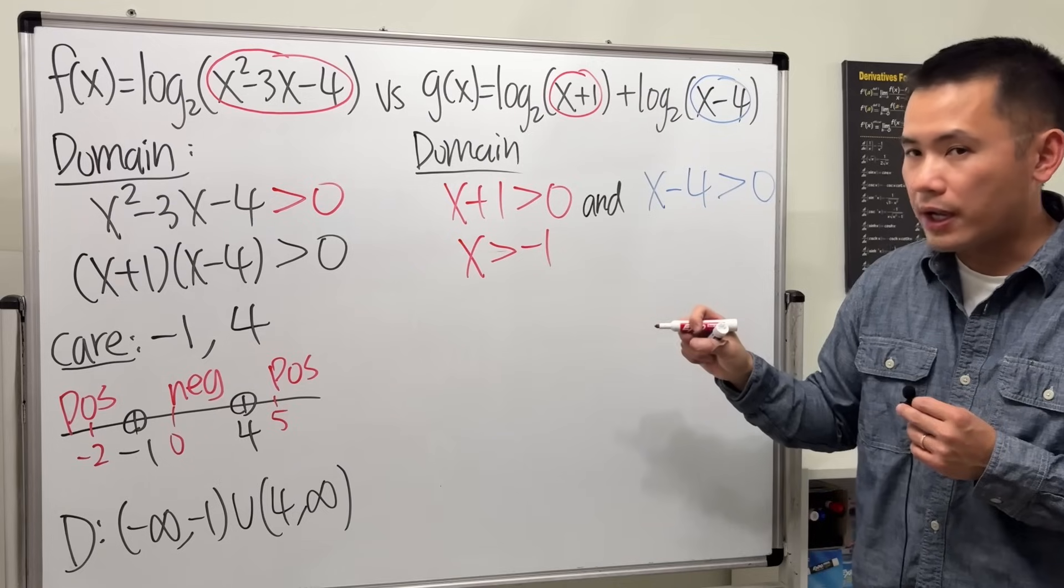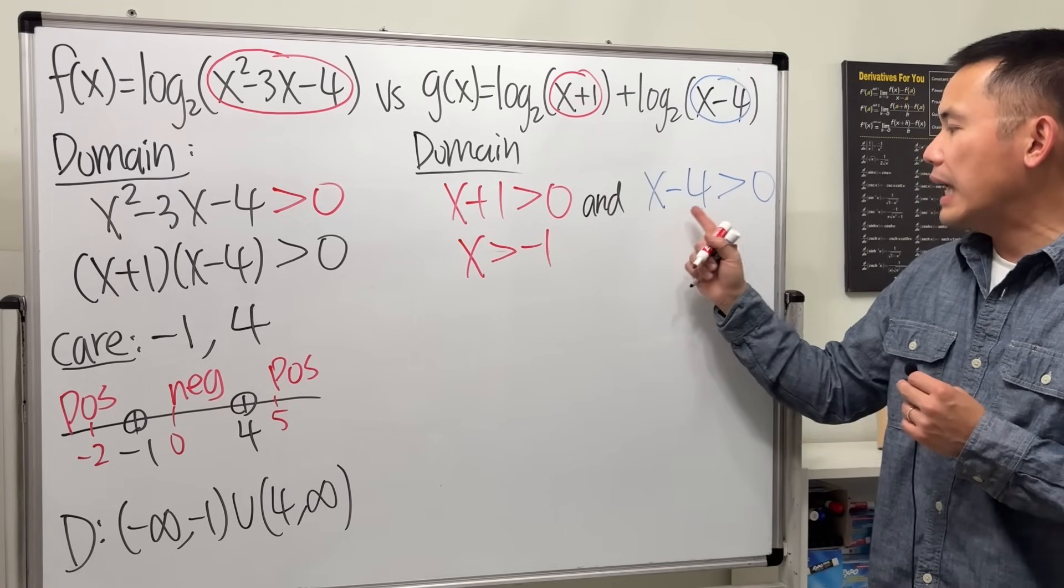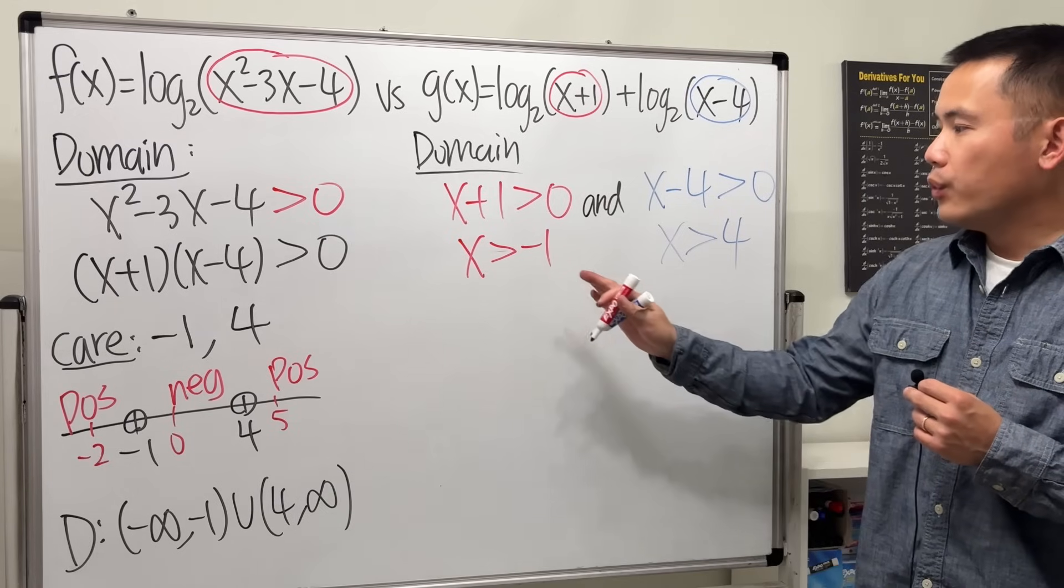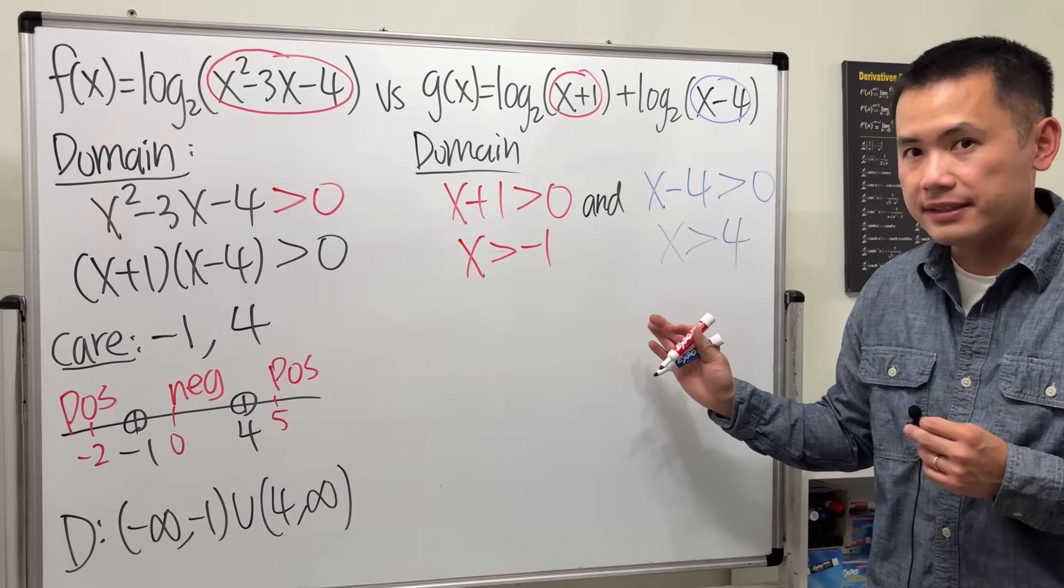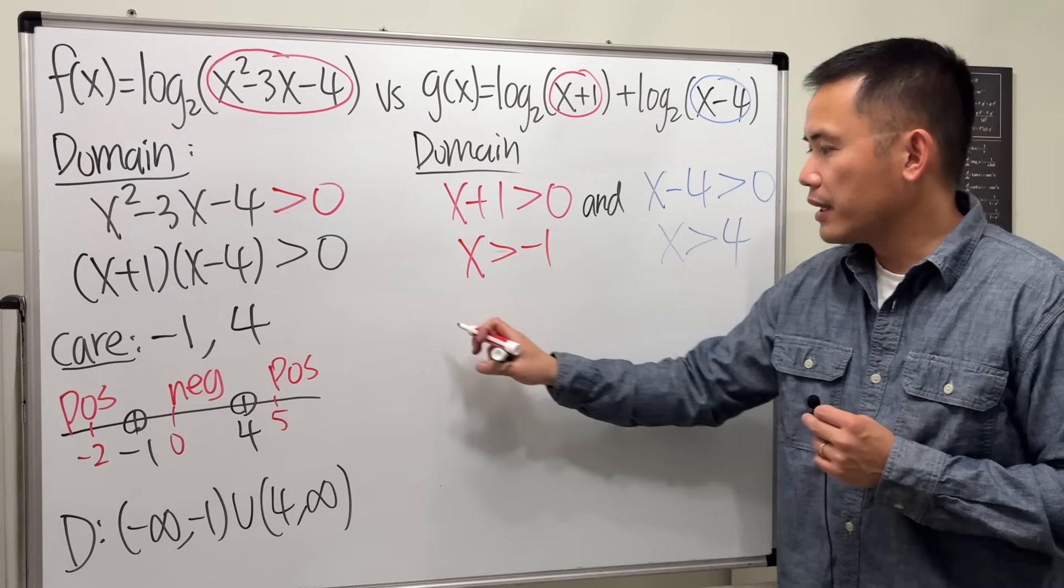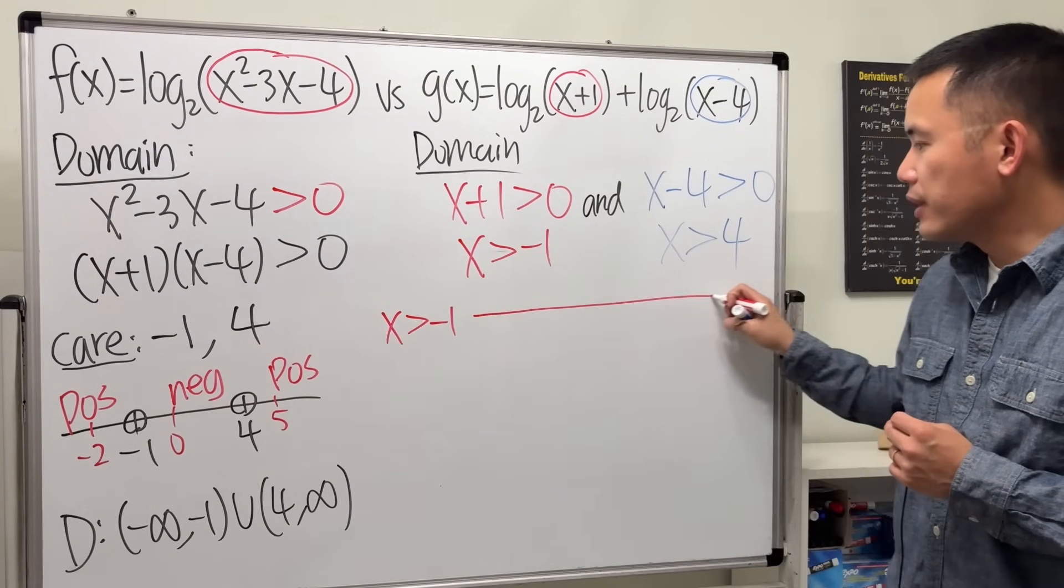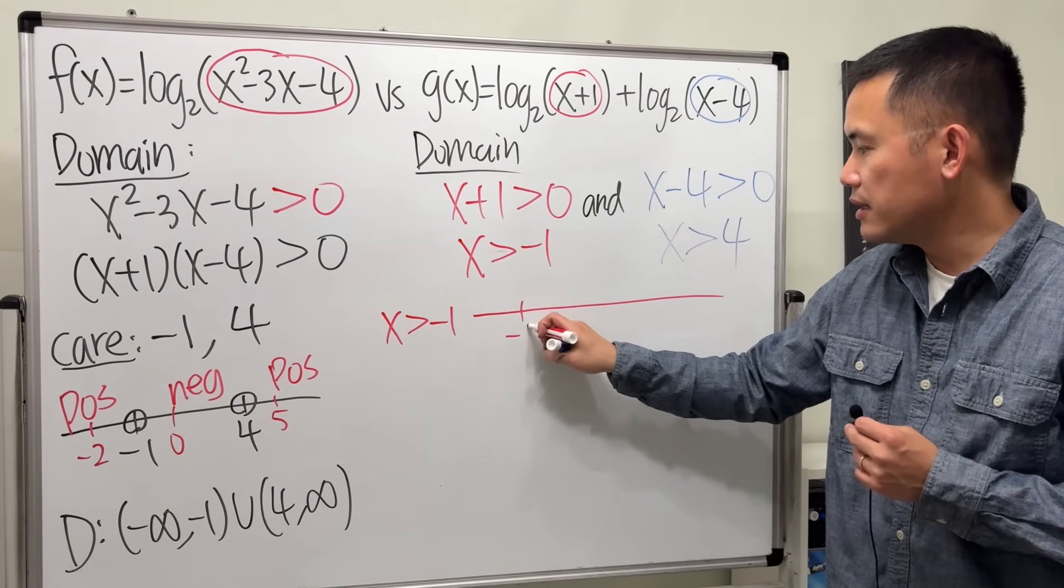Now for the first one we can just subtract one to both sides, so we get x has to be greater than negative 1. For the other one add 4 to both sides, x has to be greater than 4. We have to satisfy these two inequalities at the same time. To do so, here's how we can do it.